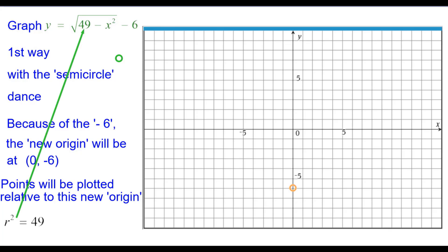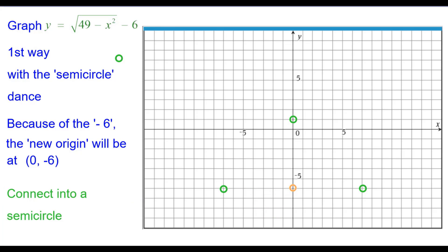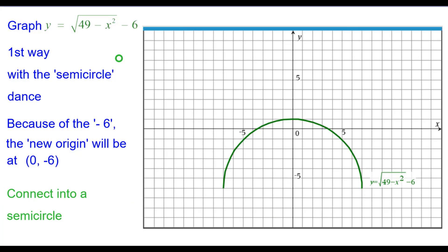Since r squared is 49, then we know the radius is 7. We'll go right 7 from that origin, up 7, and left 7. We have three points that we can now connect into a semicircle, so make it look more like a semicircle.